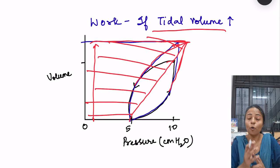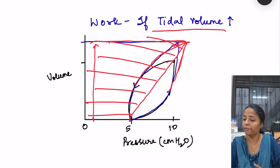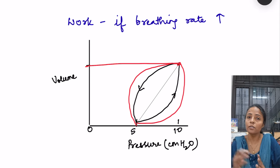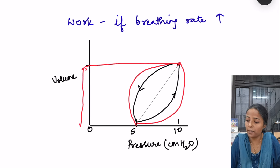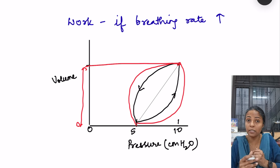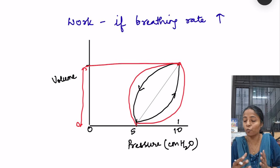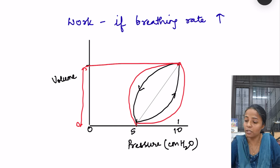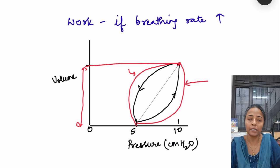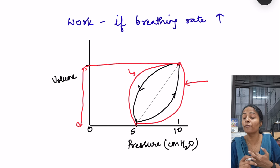What will happen if breathing rate increases — the person is breathing fast? In that case the graph looks a little different. The tidal volume is the same but breathing rate increases, so the viscous resistance as well as the airway resistance increase, because the airflow velocity — the speed with which air is flowing — is increasing. So that portion of the work of breathing is increasing. That was about how work of breathing increases if we increase tidal volume or breathing rate.